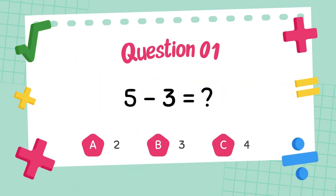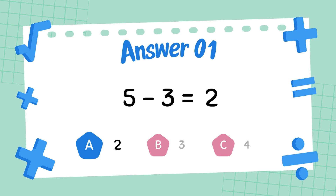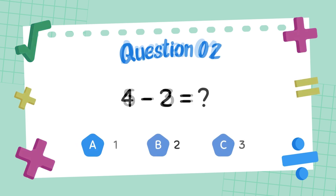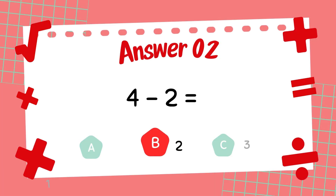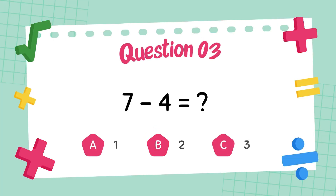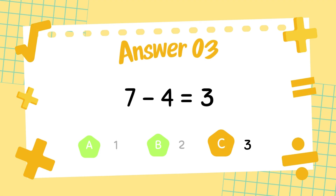What is 5 minus 3? The answer is 2. What is 4 minus 2? The answer is 2. What is 7 minus 4? The answer is 3.